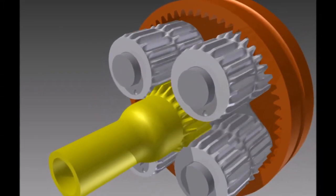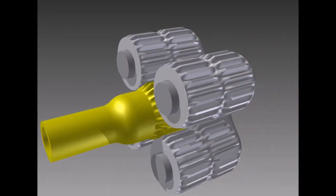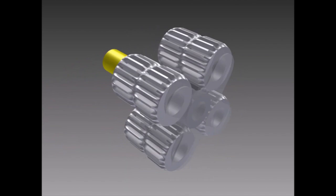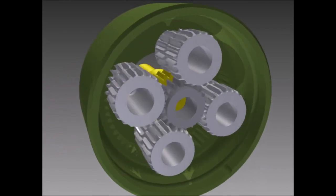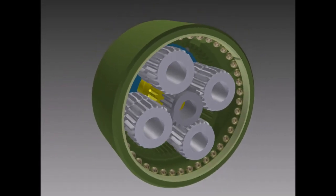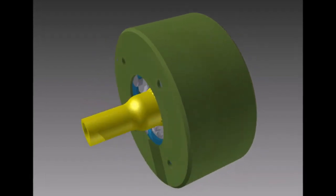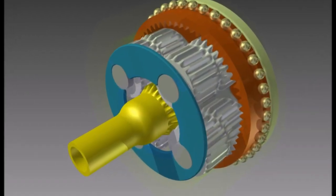The carrier holds the planetary gears, enabling smooth rotation around the sun gear. As the sun gear receives input, the planetary gears and carrier rotate, achieving consistent and effective speed reduction through their varied gear teeth.